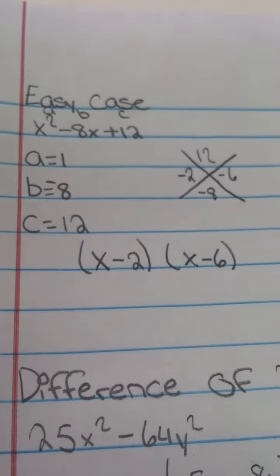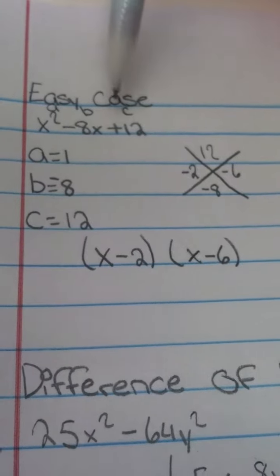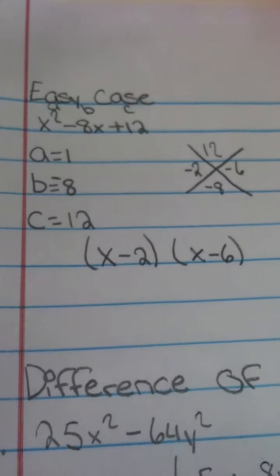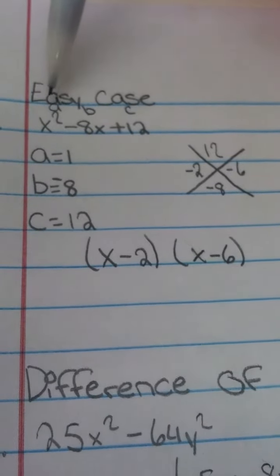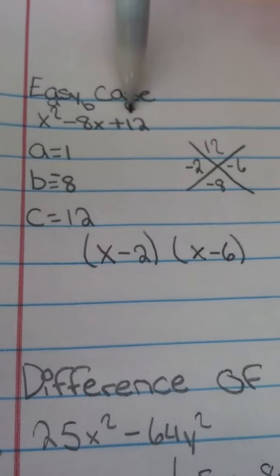Okay, so this is how you're going to do an easy case. First, you've got your problem, x squared minus 8x plus 12. The first thing I like to do is label it. So it would be x squared would be a, negative 8 would be b, plus 12 would be c.